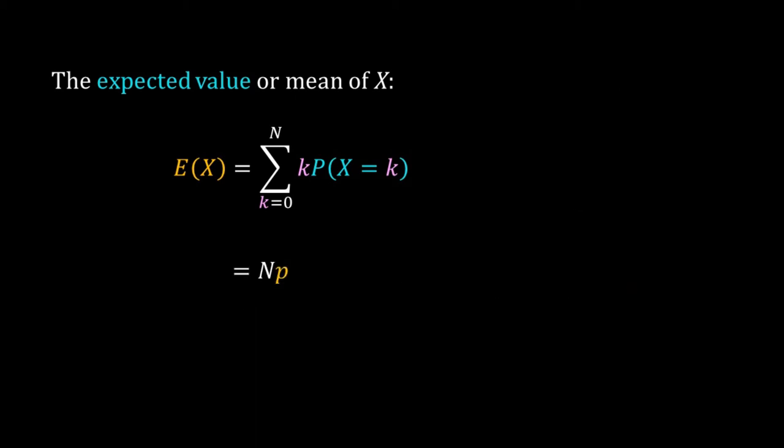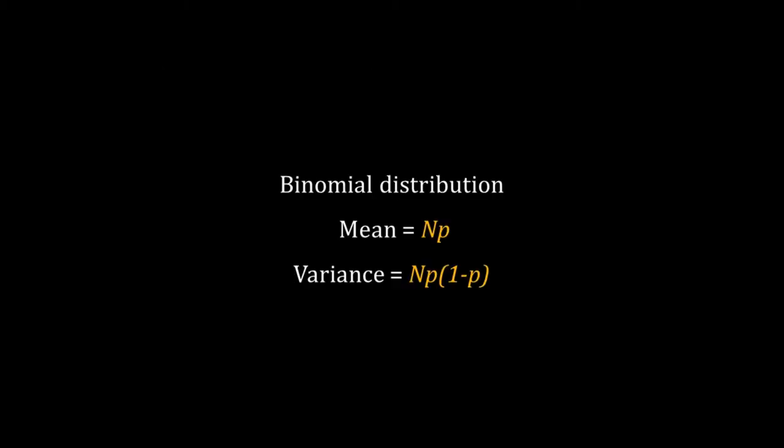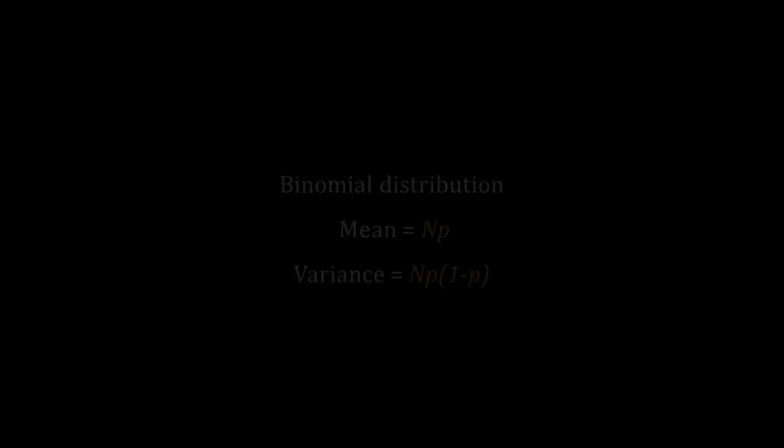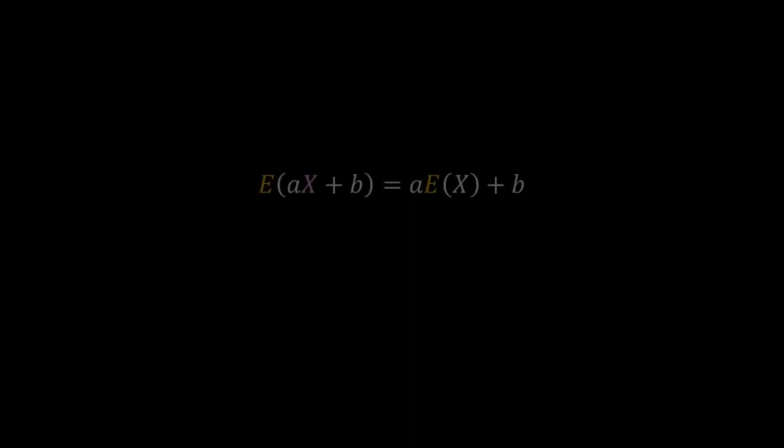We are left with only n times p, so the mean or expected value of the binomial distribution is n times p, where n is the number of trials and p is the probability of success in a trial. Using the definitions of first and second moments, we can derive the mean and variance of many other discrete distributions. The variance of the binomial distribution is n times p times (1 − p).